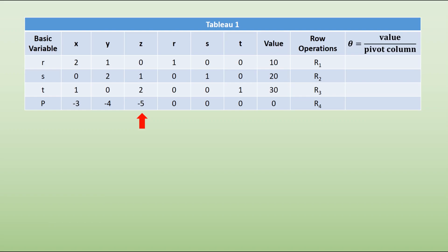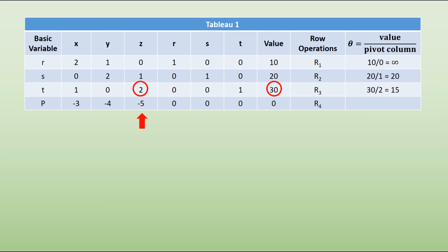That means that our pivot will be somewhere within this column. Next, we're going to calculate the values of theta. For each of the rows where we have basic variables, we do the value divided by the value in the pivot column. We've got 10 divided by 0, which gives us an infinite value; 20 divided by 1, giving us 20; and 30 divided by 2, giving us 15. We look for the smallest positive value — in this case 15 — and at the intersection of these two arrows we've identified our pivot. So 2 is going to be the pivot value.